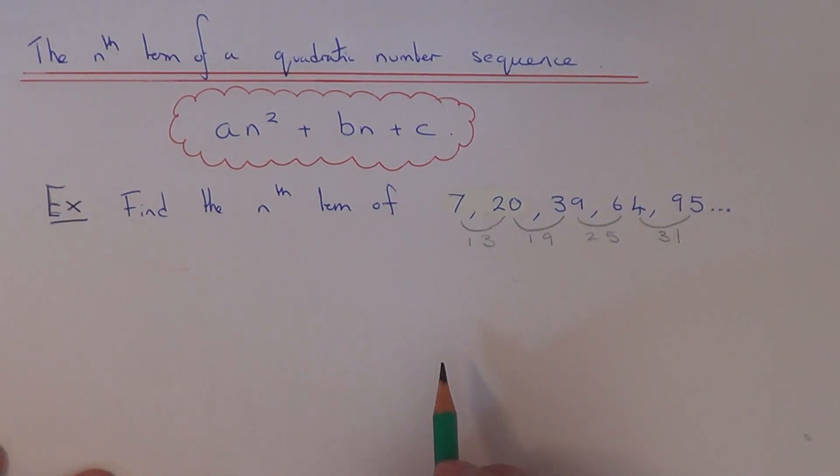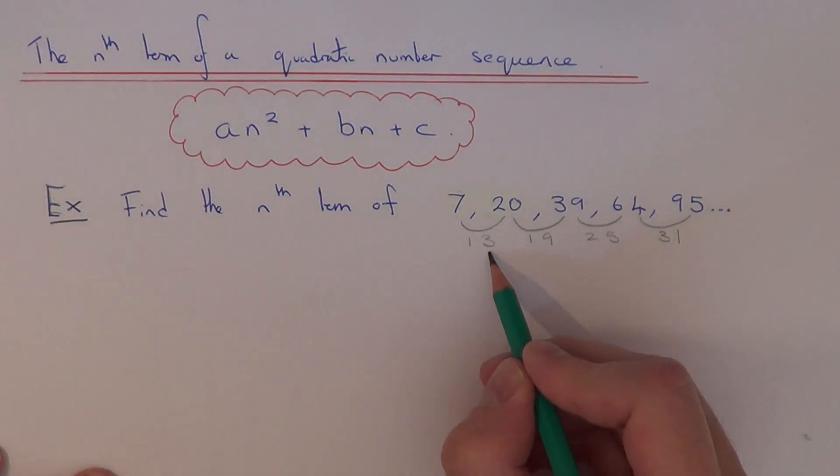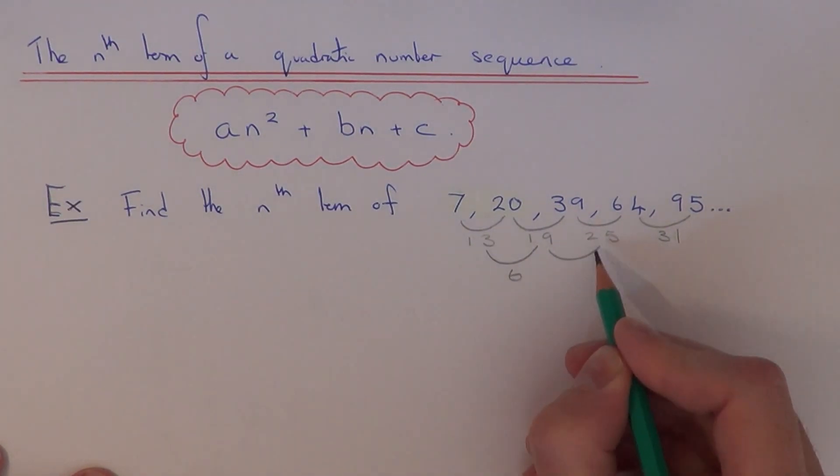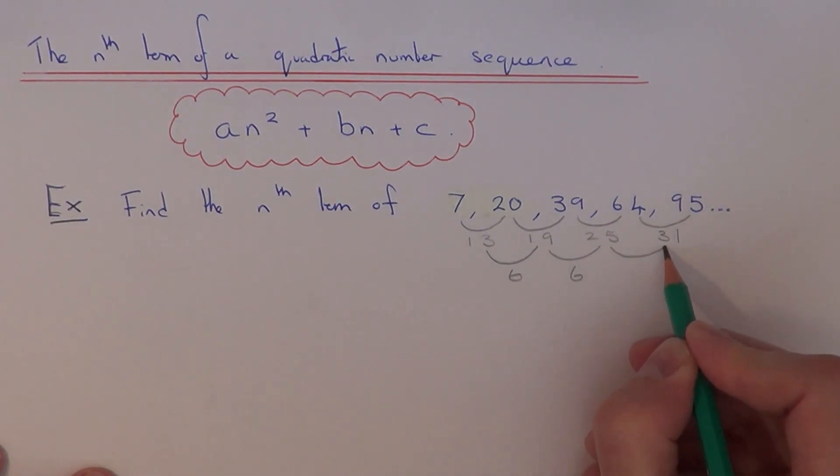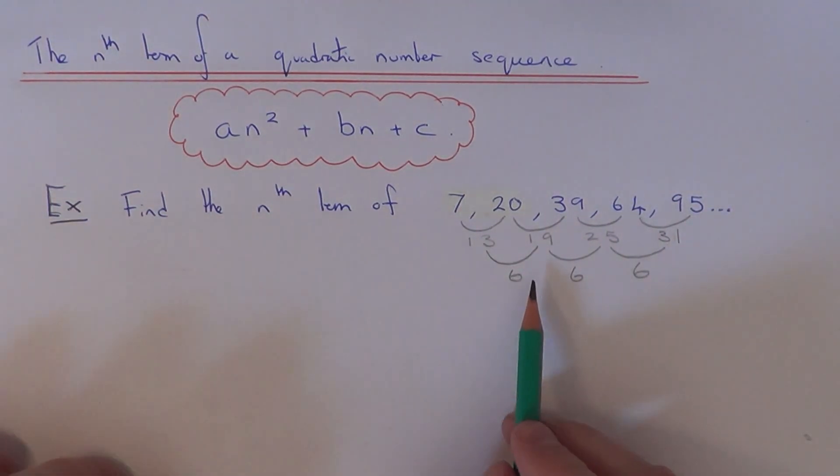So let's now calculate the second differences. So the difference between 13 and 19 is 6. The difference between 19 and 25 is also 6. And the difference between 25 and 31 is also 6. So you can see then that the second differences are all the same. So we know that this is a quadratic sequence.